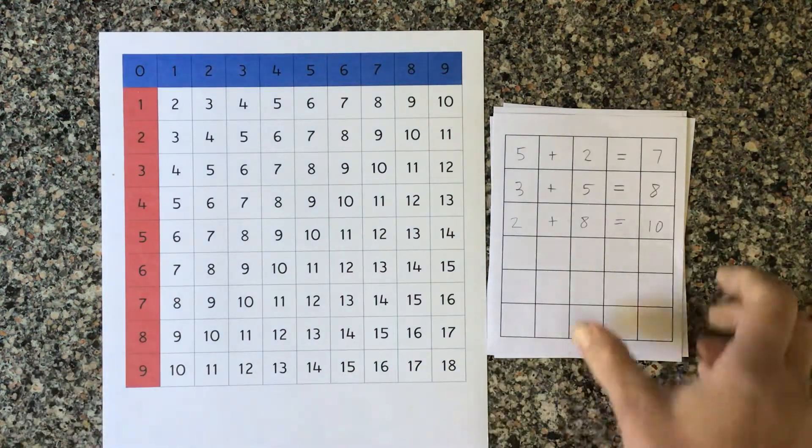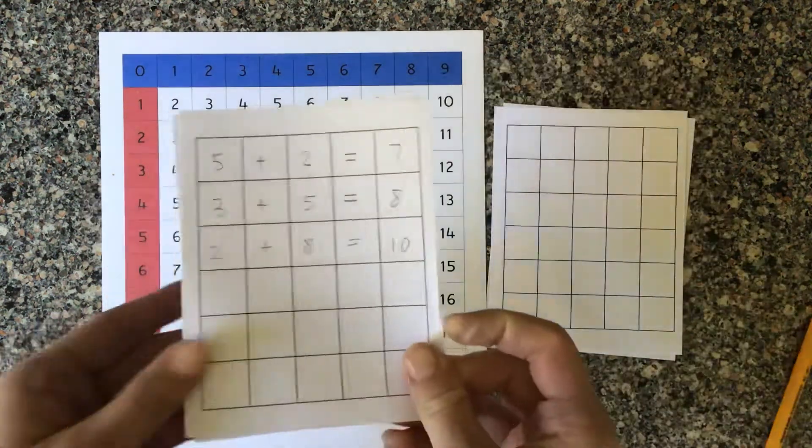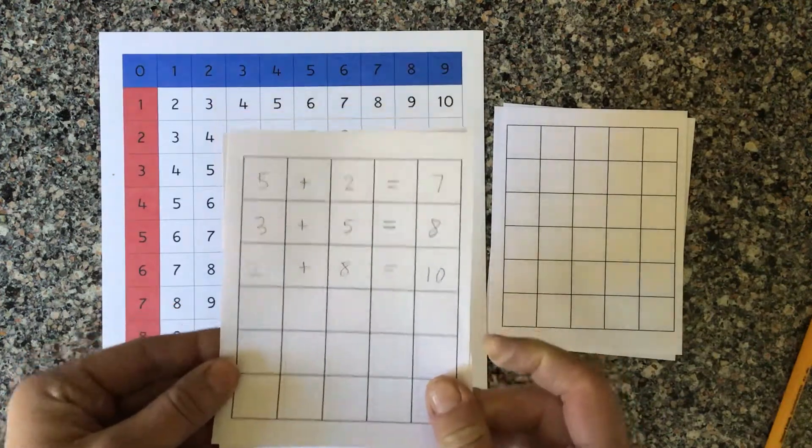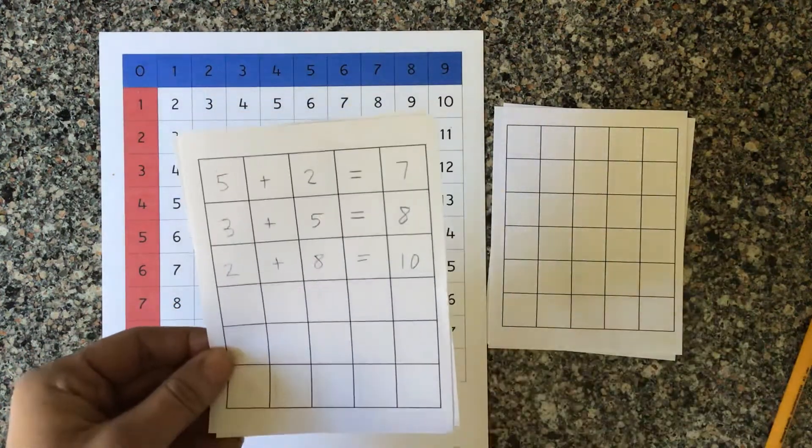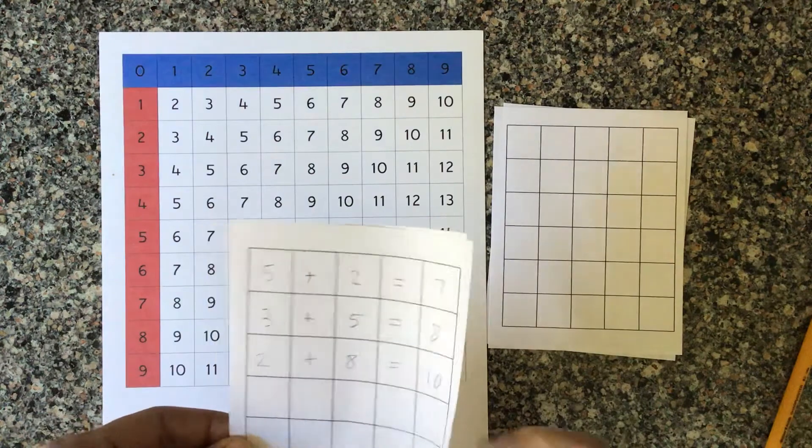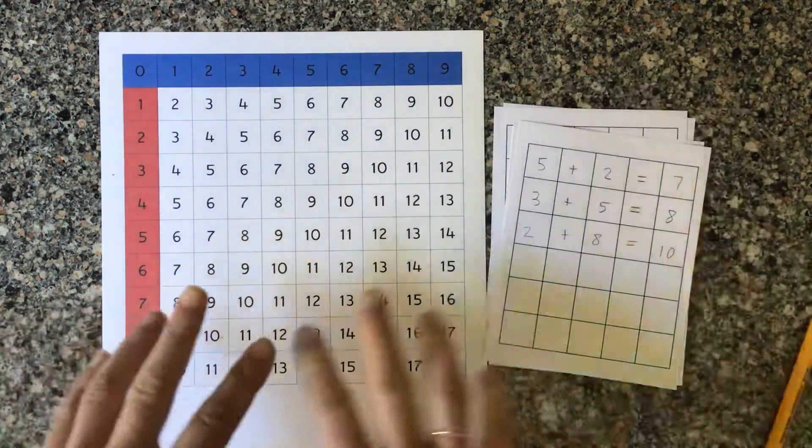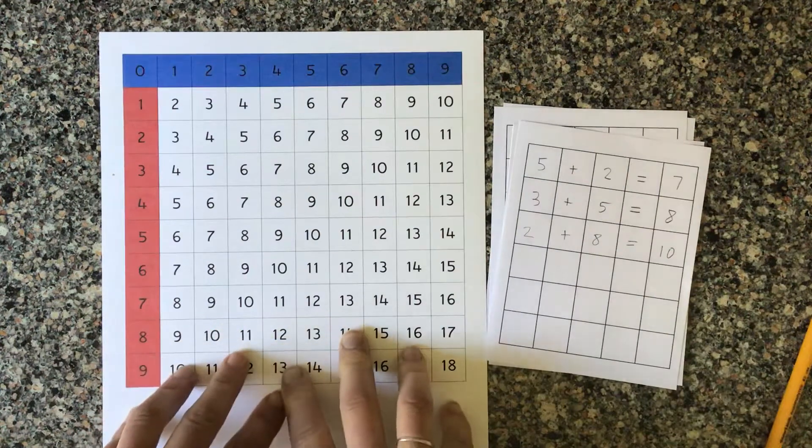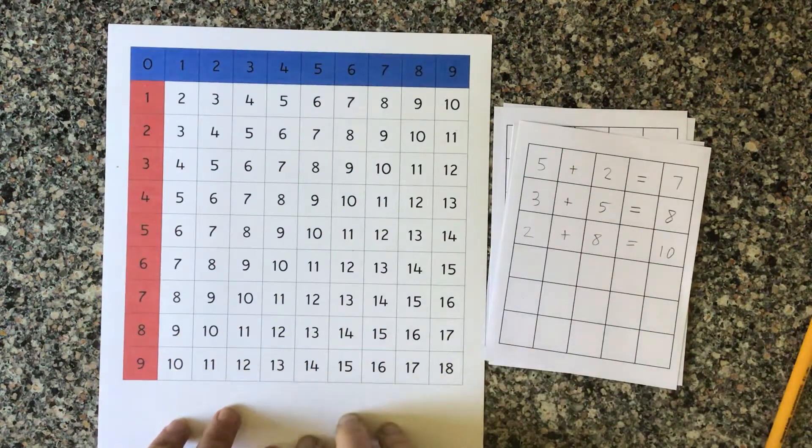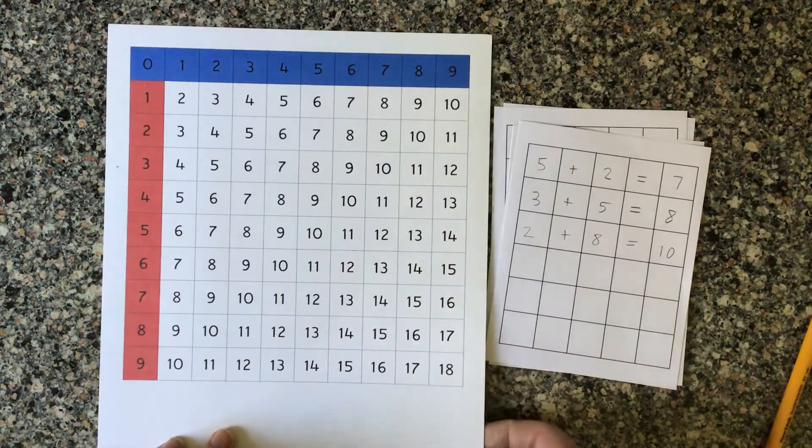So encourage your child to finish a whole sheet of paper. You can go through and check the answers to make sure they're done correctly. Repeat as often as possible. This can be really fun and an easy way to start memorizing some of those basic addition math facts.